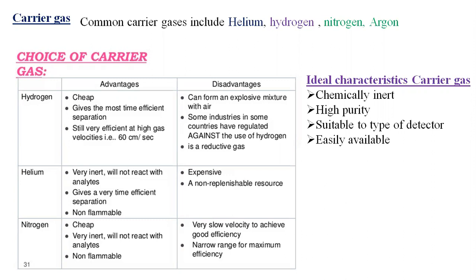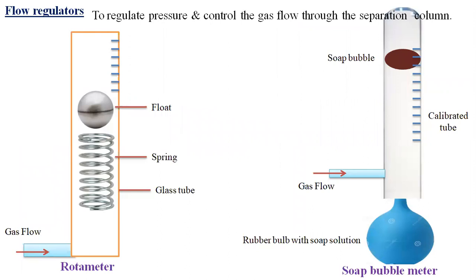The ideal characteristics of a carrier gas are: chemically inert, high purity and easily available, and suitable to the type of detector. Next are the flow regulators. When the carrier gas is stored in the cylinder at high pressure, it travels with some flow. To regulate or maintain a constant flow, we use flow regulators to regulate the pressure and control the gas flow through the separation column.